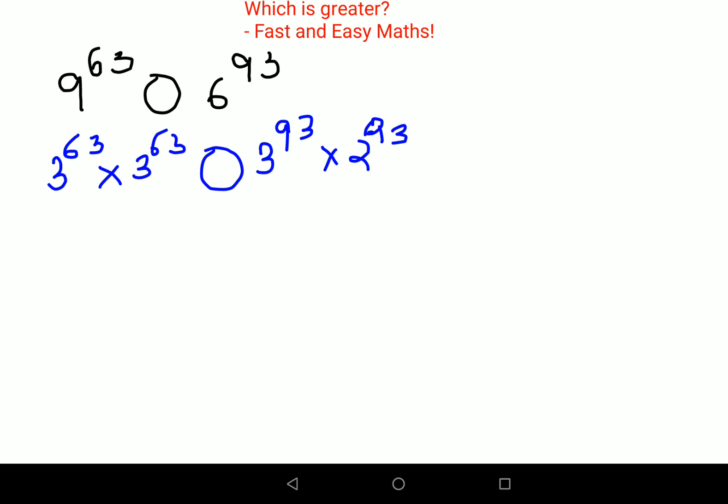Now I can split this 63 as 3 raised to 30 times 3 raised to 33, and this 3 raised to 63 will remain as it is, and we'll keep the rest as it is.